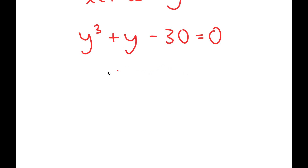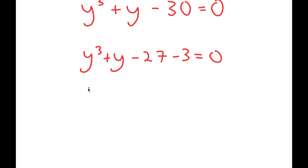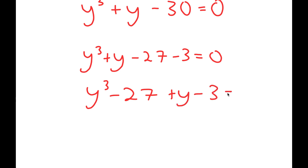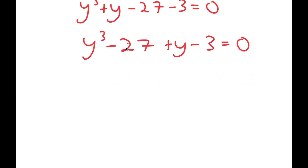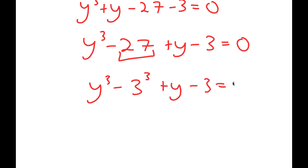From here, I'm going to rewrite negative 30 as negative 27 minus 3. And I'm going to reorder this so that it turns into y to the power of 3 minus 27 plus y minus 3 is equal to 0. Now 27 is the same thing as 3 to the power of 3, so I have y to the power of 3 minus 3 to the power of 3 plus y minus 3 is equal to 0.